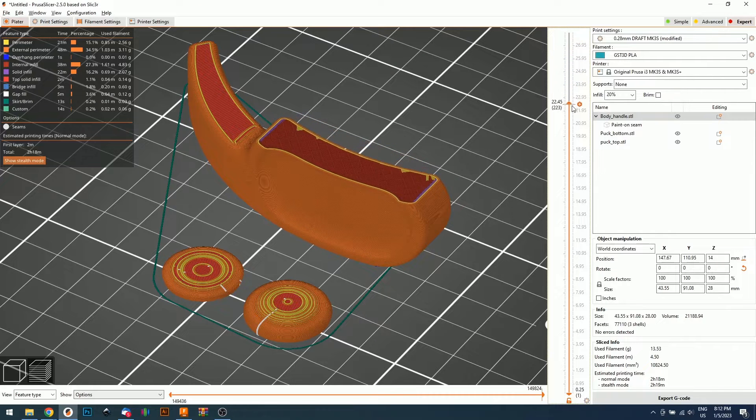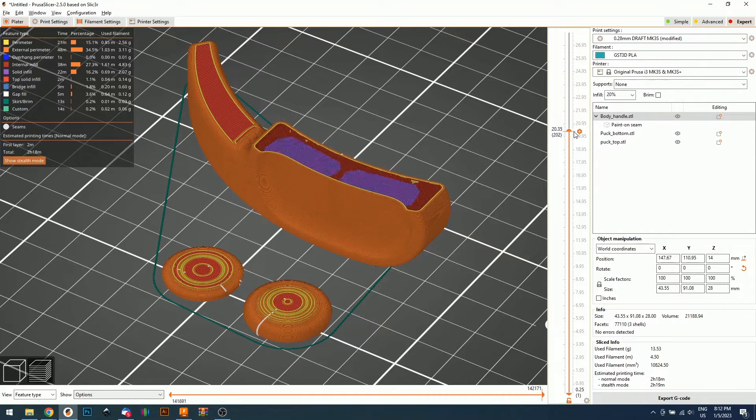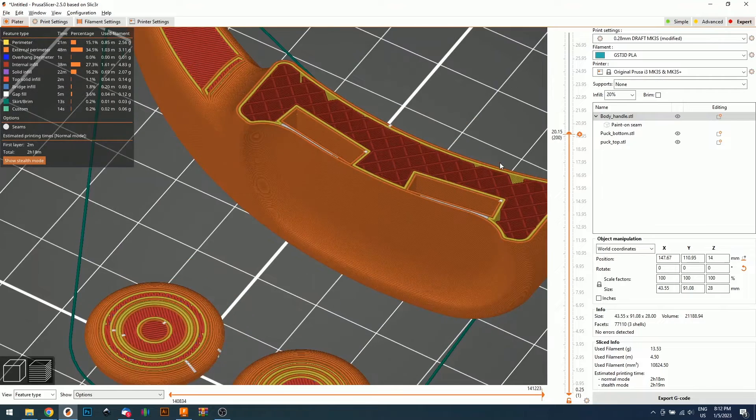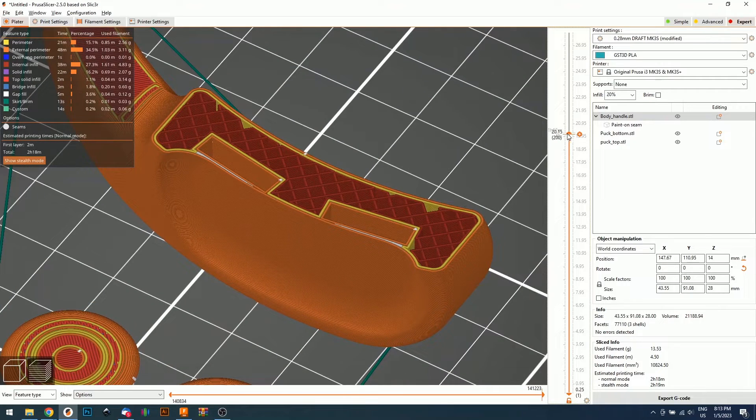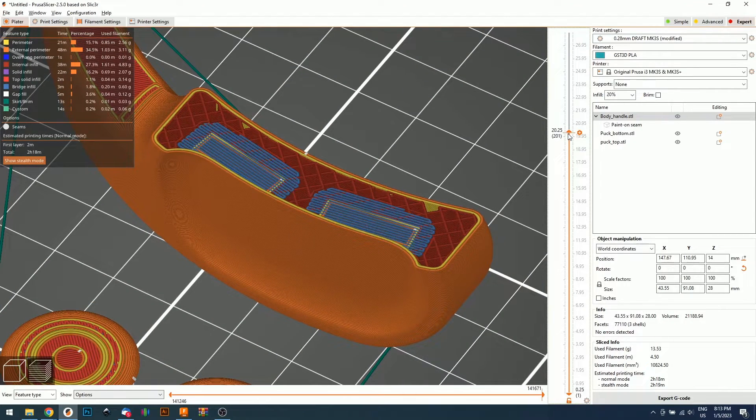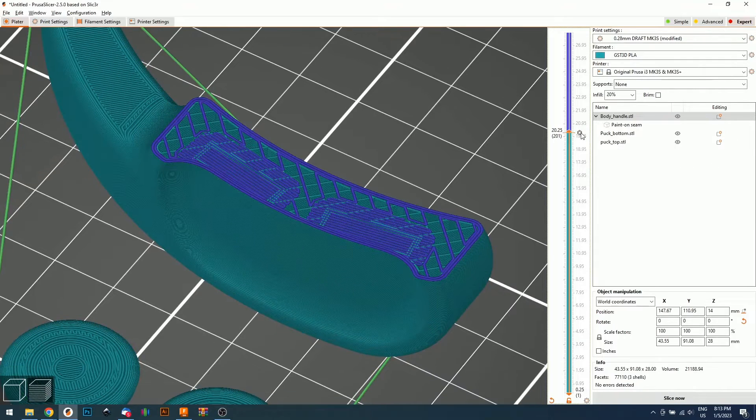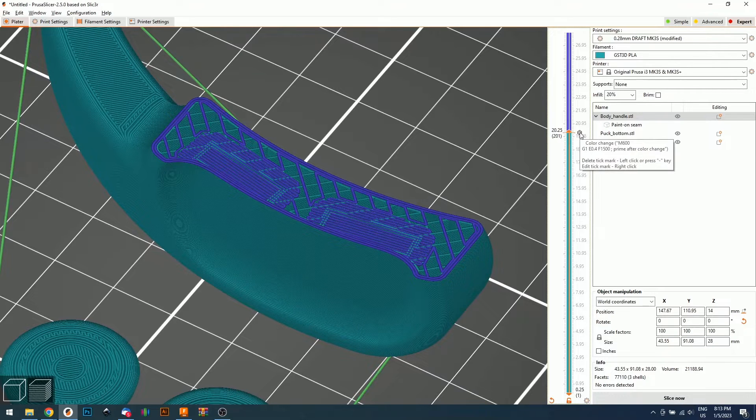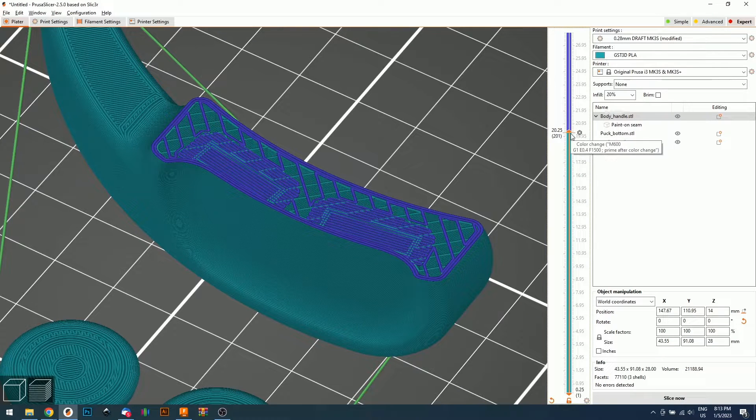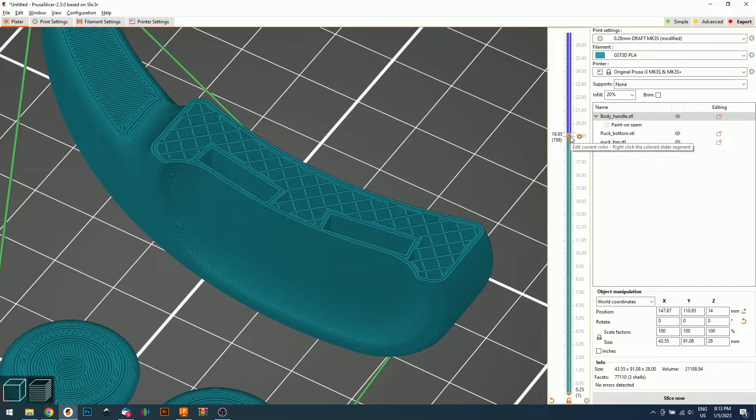The other one, and this is really important, is that we need to pause the print in order to be able to insert the magnets. So with PrusaSlicer, all we need to do is find the layer where the holes are breached. We are going to make a filament change pressing right here at the plus cycle. And just like that,